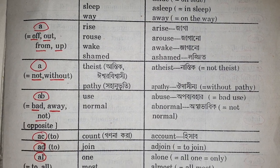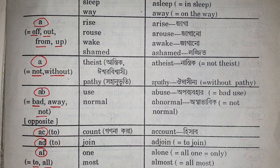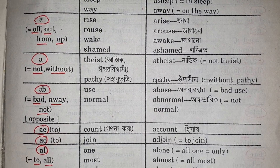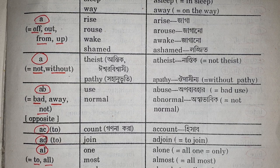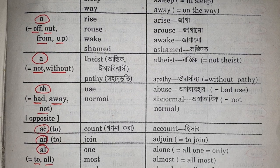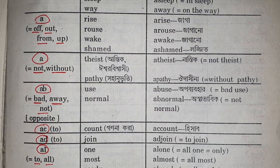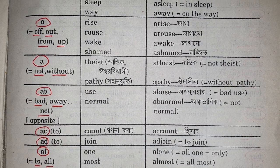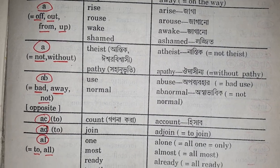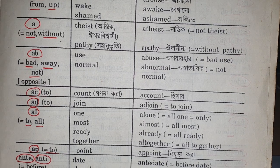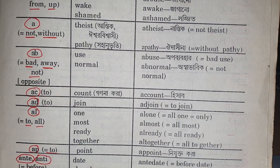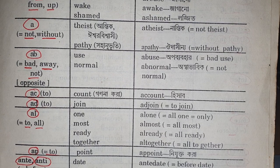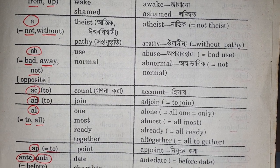Next, ab with the meaning of bad, away, or not, which will give the sense of opposite. Base word: use — abuse; normal — abnormal. Like this: AC with the meaning of two — count, account. Add with meaning of two — join, adjoin.